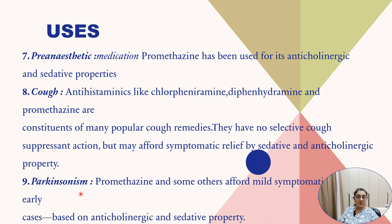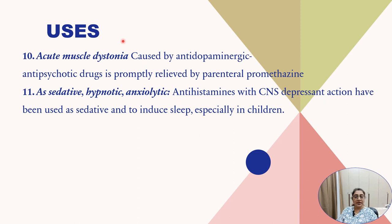In Parkinsonism, promethazine and some others afford mild symptomatic relief in early cases based on their anticholinergic and sedative properties. In acute muscle dystonia caused by antidopaminergic and antipsychotic drugs, it is promptly relieved by parenteral promethazine. Antihistaminics with CNS depression properties have also been used as sedatives and to induce sleep, especially in children.